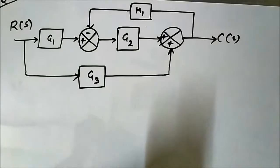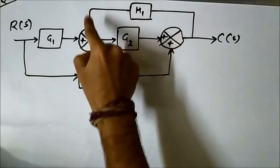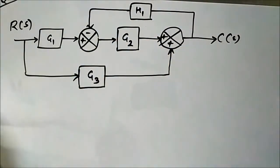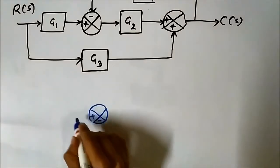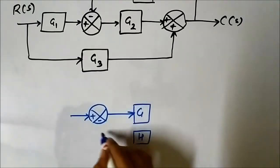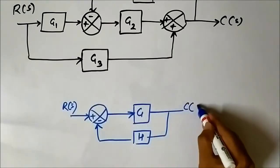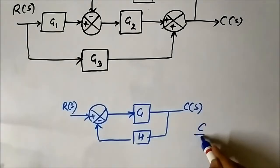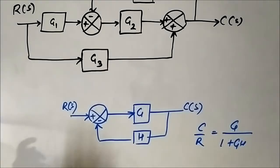Let us start simplifying it. As we have done in the previous questions, we have to find a pattern, a place where we can apply the block diagram reduction rules. Here we can see there is a negative feedback connection, but it is not in the standard form. We have to manipulate it without altering the signal values so we can apply the rule g by 1 plus gh and convert it into a single block.